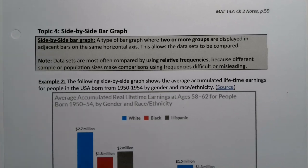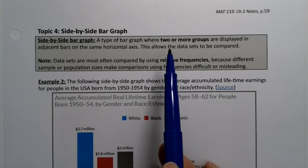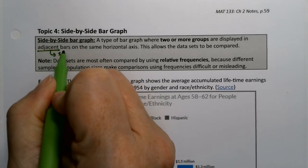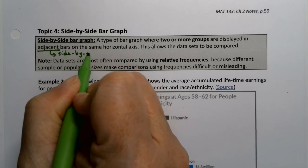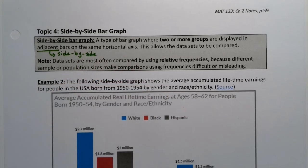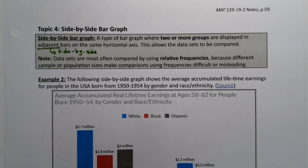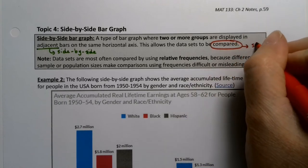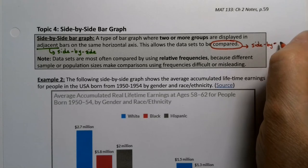A side-by-side bar graph is just what you think. It's a bar graph but it has multiple categories or groups displayed side-by-side in adjacent bars. Adjacent means side-by-side on the same horizontal axis. Technically they can be vertical — you can tilt the whole graph 90 degrees — but most of the ones in our book are vertical. This allows data sets to be compared; the fact that they're side-by-side enables that comparison.